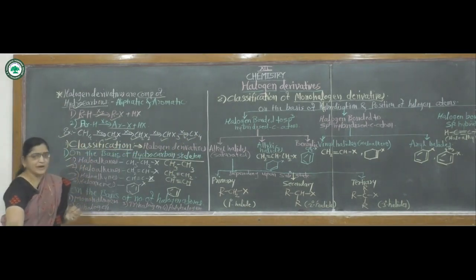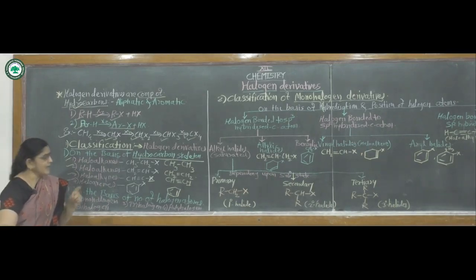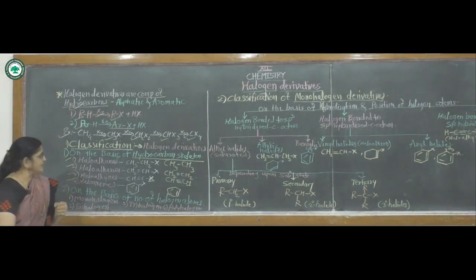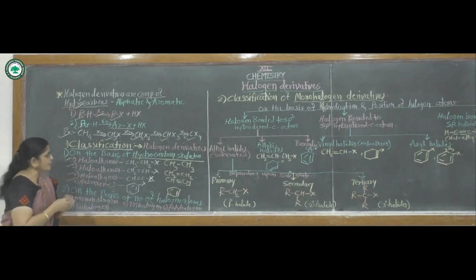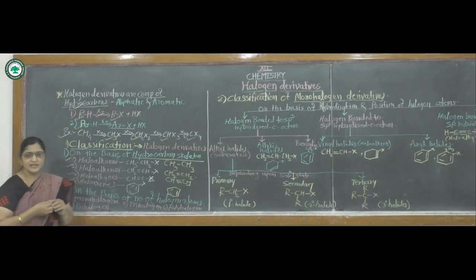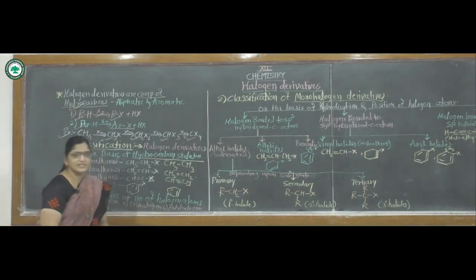Halogen derivative: a compound in which one or more hydrogen atoms of an aliphatic or aromatic hydrocarbon are replaced by a corresponding number of halogen atoms is called a halogen derivative.